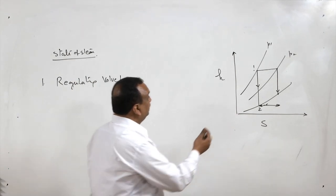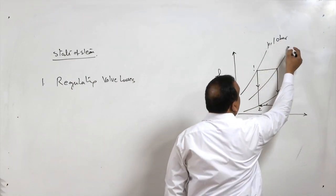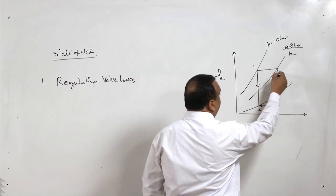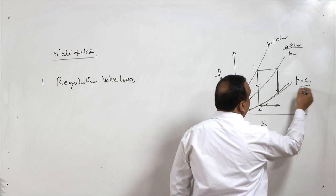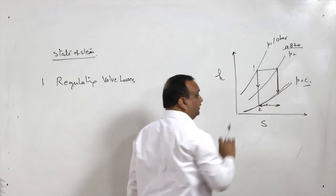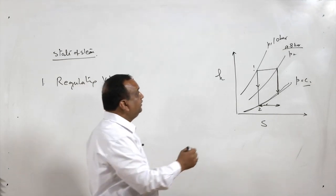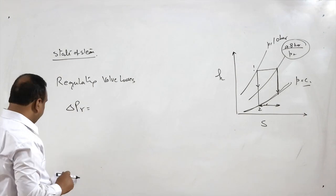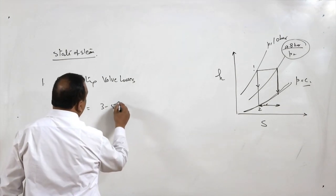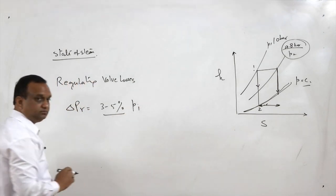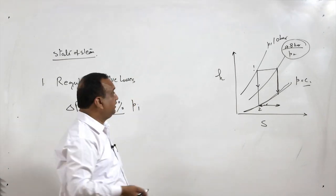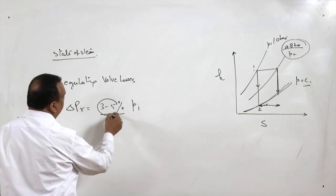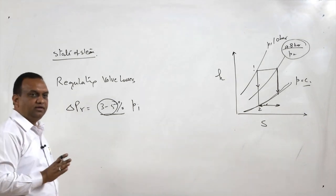Since throttling is taking place, the available energy will be reduced — this will be the loss of energy during the throttling process. There is a pressure loss also: suppose the inlet pressure is 10 bar, the steam may be entering at 9.8 bar. When the steam is entering at 9.8 bar it will expand along a different constant pressure line, so the work output will be less. This is considered as a loss. The magnitude delta P_r, the pressure loss in the regulating valve, is 3 to 5 percent of P1. In a well-designed valve it is 3 percent; in a poorly designed valve it can go up to 5 to 7 percent.